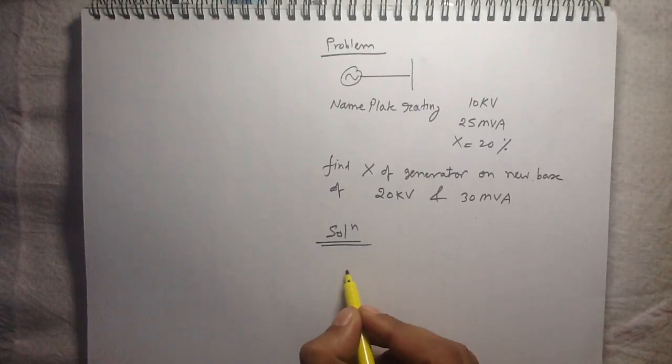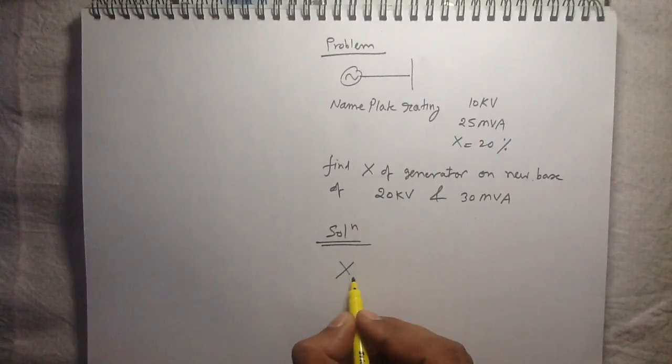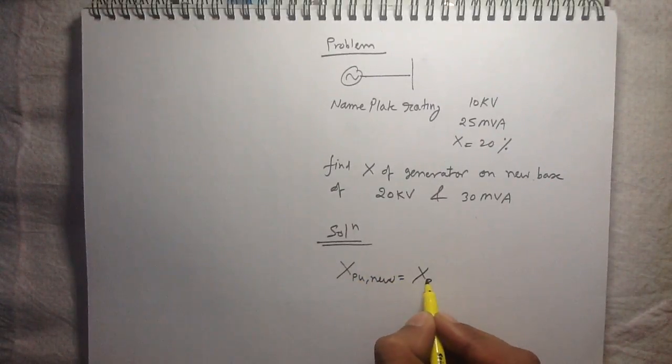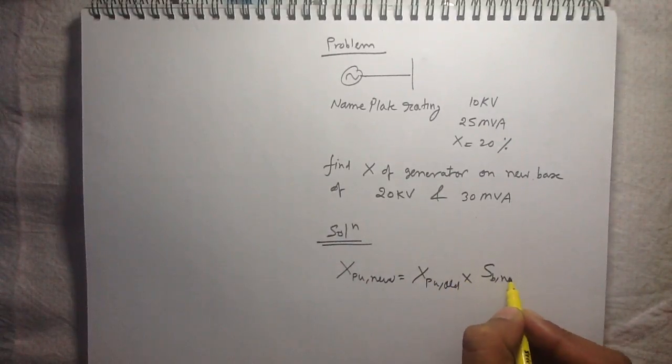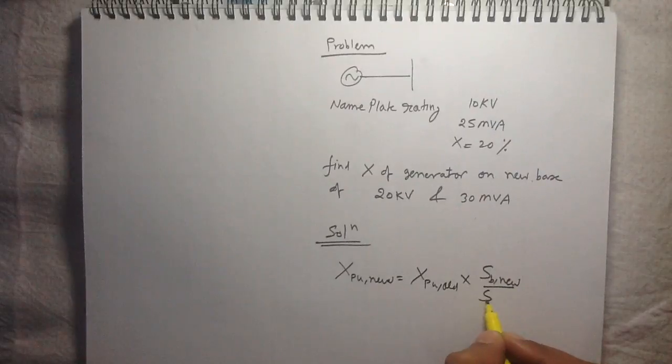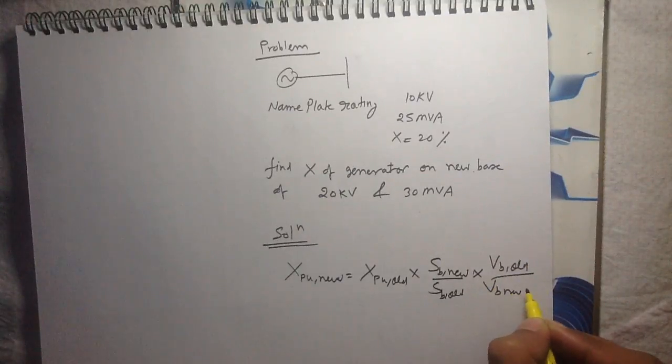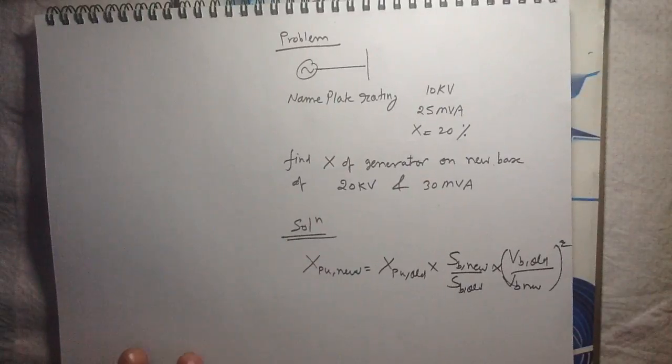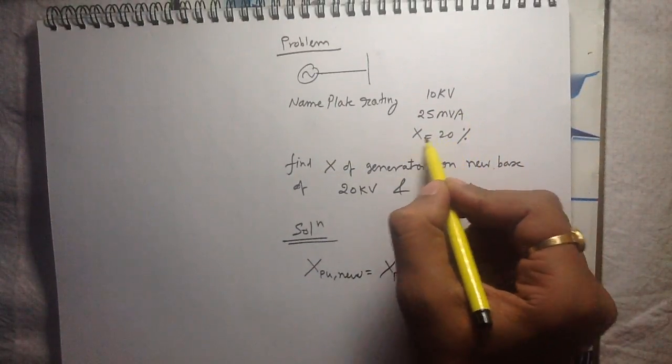In the previous video I told you one formula. The formula is: the new per unit reactance equals to old per unit reactance into S base new divided by S base old into V base old divided by V base new whole square.